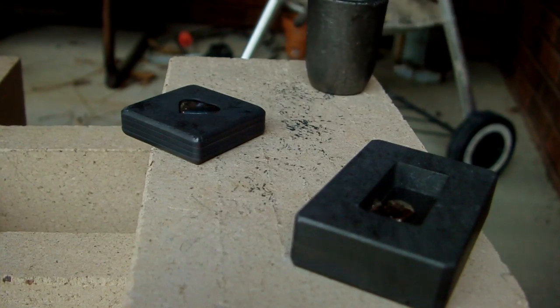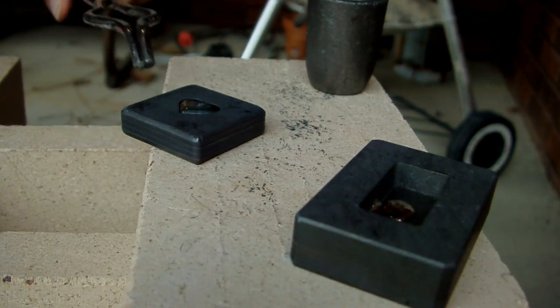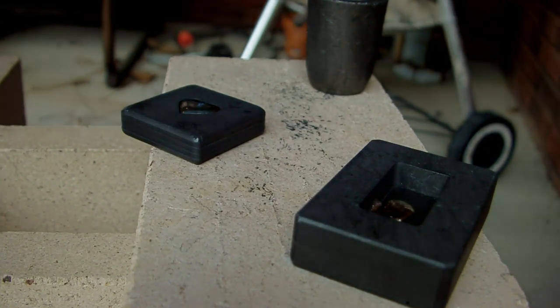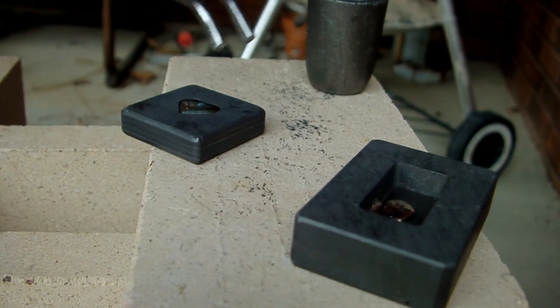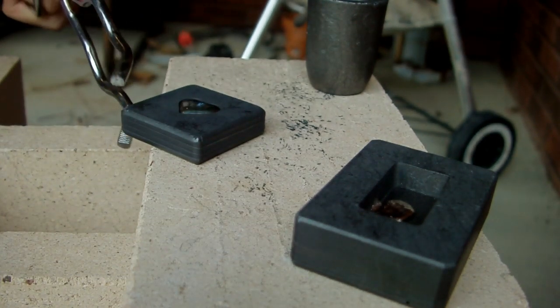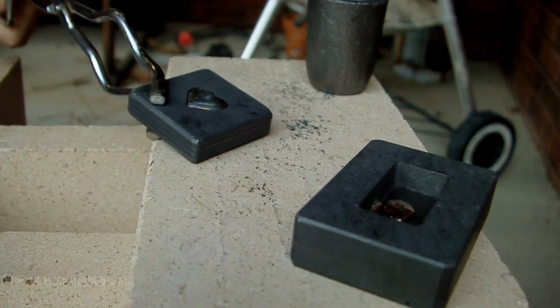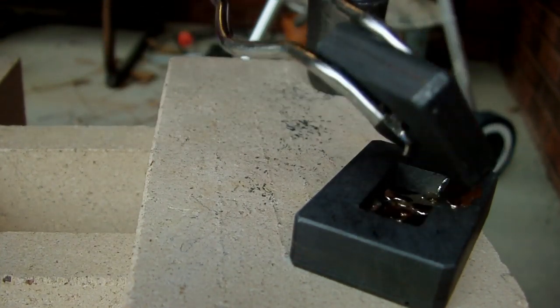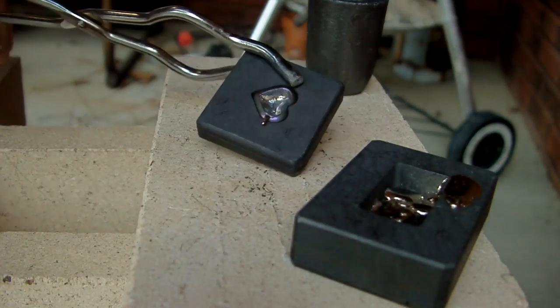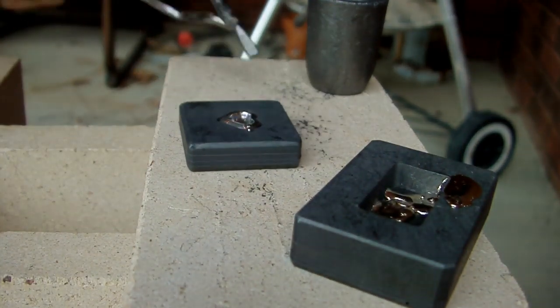So now what we want to do is wait and let the bismuth solidify about partway, about halfway, so that the outside is solid and the inside is molten. That takes just a few minutes and now we're going to take it and dump out the middle. And we're left with a nice hollow heart shape.